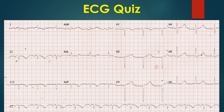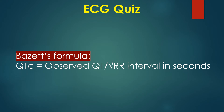Down-sloping ST with T-wave inversion is seen in lead 1. QT interval is 480 ms with RR interval 0.88 s. Corrected QT interval calculated by Bazett's formula is 511 ms, which is definitely quite prolonged. Hypokalemia, hypomagnesemia, and hypocalcemia have to be checked for. One would have expected lower amplitude of T-waves in typical hypokalemia. Bazett's formula: QTc equals observed QT divided by the square root of RR interval in seconds.